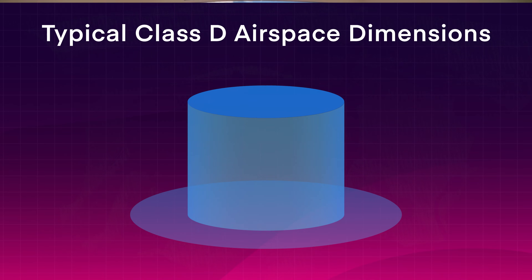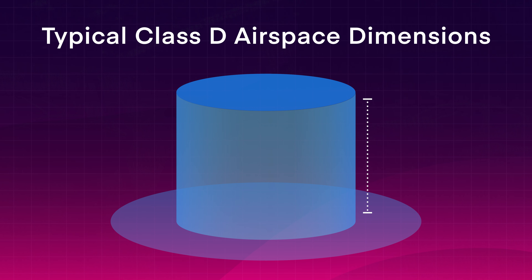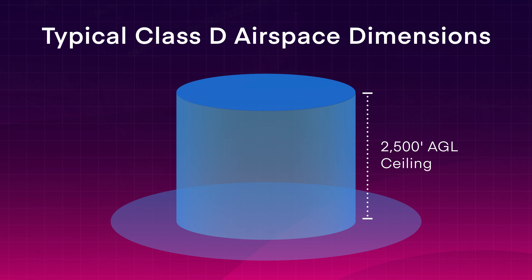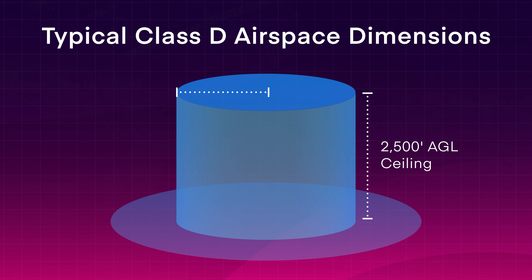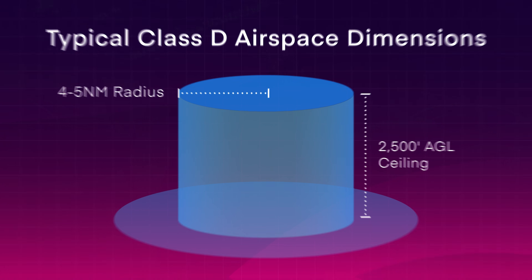If you could see the airspace in three dimensions, it would look very much like a cylinder. It starts at the surface and typically extends to 2,500 feet above the airport. It also has a radius of about 4 nautical miles, although the exact size depends on the airport.